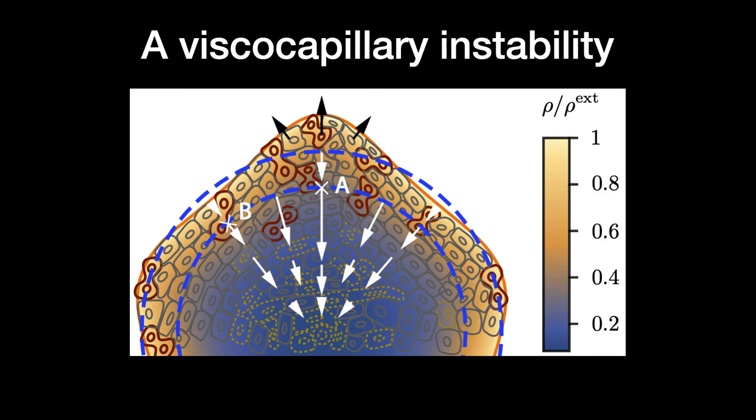These differential flows create internal stresses within the aggregate, which resist the inward motion of the cells located in A. This in turn slows them as compared to what we would expect without this resistance. As a consequence, the cells located close to the surface above A are pushed outwards, which amplifies the original perturbation.